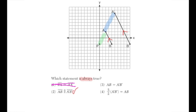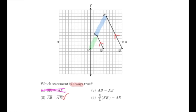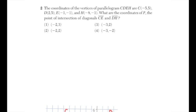Option two is probably the correct answer. Option three says AB is equal to A prime B prime, but visually AB is significantly smaller — we can easily rule that out. Option four says five halves times A prime B prime equals AB, but no — it's five halves times AB that equals A prime B prime. We can rule out option four, confirming option two is the correct answer.